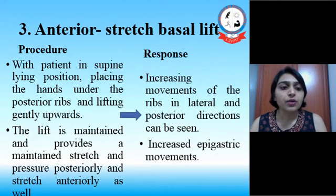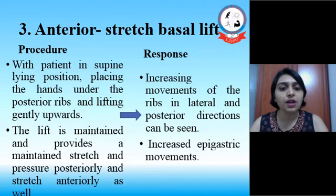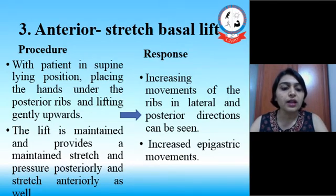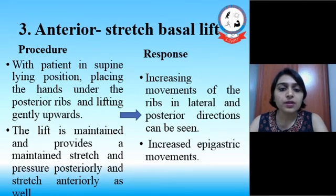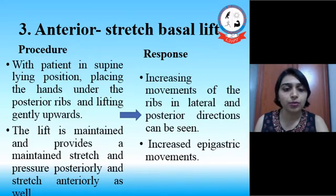In the procedure of anterior stretch basal lift, with the patient in supine lying position, we have to place the hand under the posterior ribs and lift gently upward. The lift is maintained and provides a maintained stretch and pressure posteriorly, and stretch anteriorly as well. The response is an increase in movement of the rib in the lateral and posterior direction, and we may also find an increase in epigastric movement.